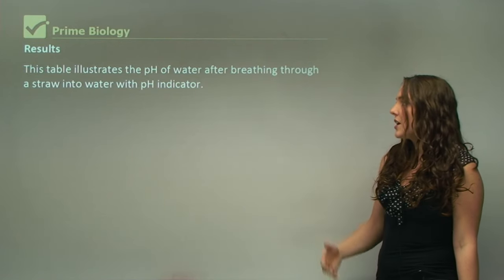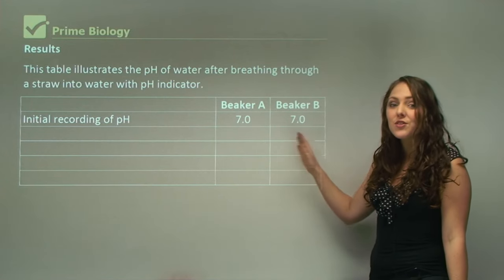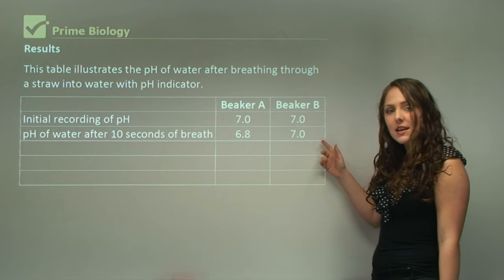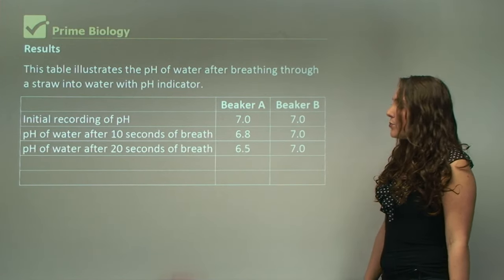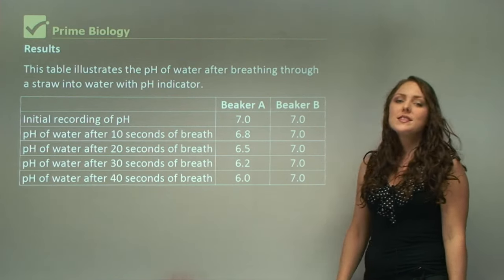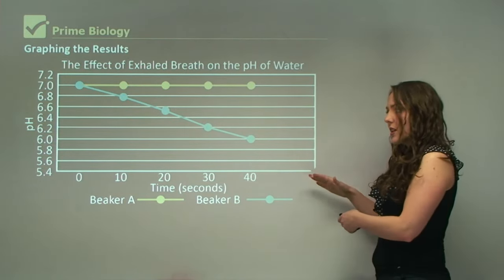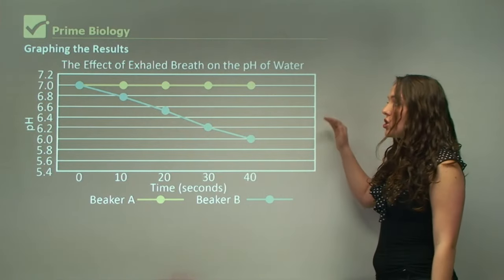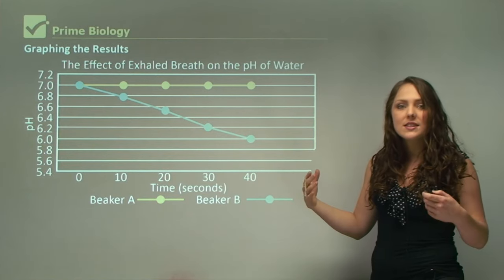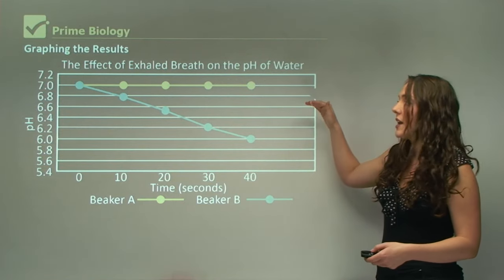This table illustrates the pH of water after breathing through a straw into water with pH indicator. Our initial reading is seven for both. After 10 seconds, we can see there's some change in beaker A, which is 6.8, compared to seven of beaker B. After 20 seconds of breath, we have 6.5. After 30 seconds, 6.2. And after 40 seconds, we have 6. When we graph these results, this graph is a pretty good graph to show the differences. If it was an even better graph, it would have the pH value all the way down to zero, and that's a scientific graph. However, for the purpose of this experiment, I'm showing the difference of pH and how it's changing.